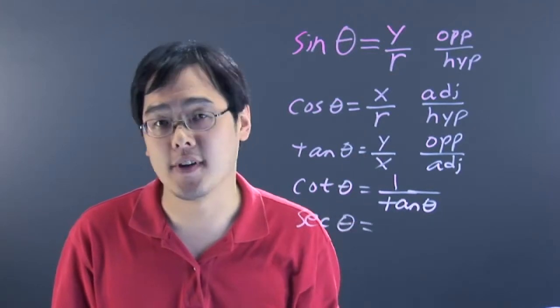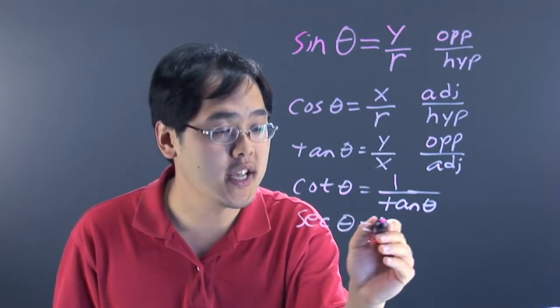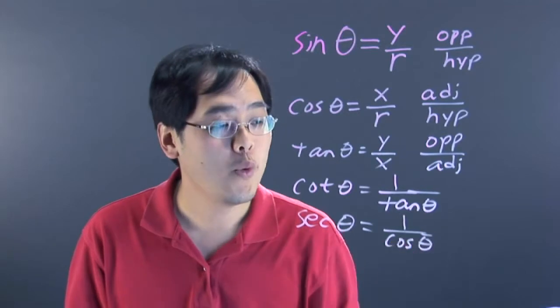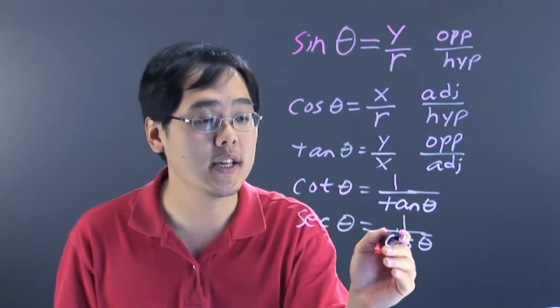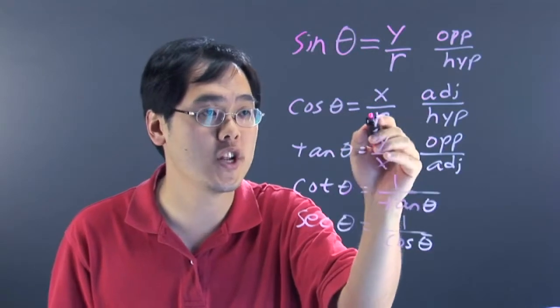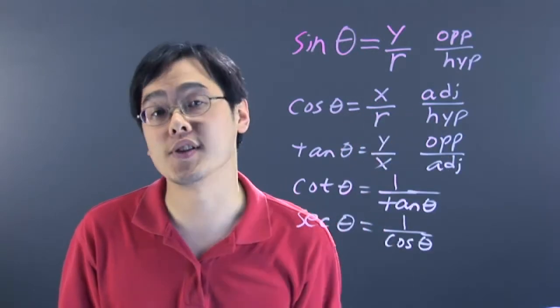Now, you have the secant function. The secant, by definition, is 1 over cosine of theta. What that basically means here is that the secant is the reciprocal of cosine. So, think of the cosine definition, and just flip the fractions, and you'll have the secant definition.